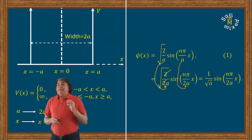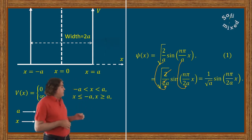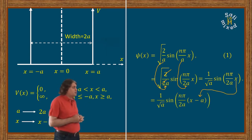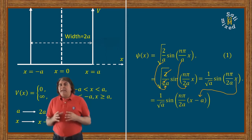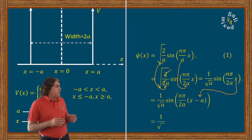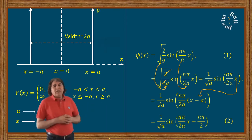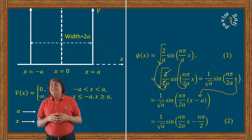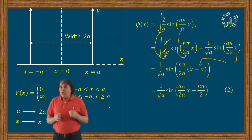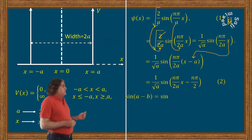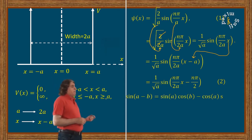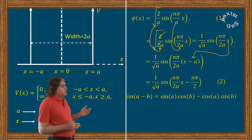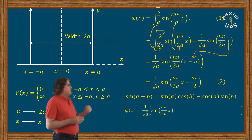Now replacing x with x minus a, we substitute x minus a into the argument of the sine function. Opening the brackets, the argument of the sine function splits into two terms. Using the trigonometric identity sin(A minus B) equals sin A cos B minus cos A sin B, equation 2 can be rewritten into this form as equation 3, giving the general wave function for the symmetric infinite potential well of width 2a.